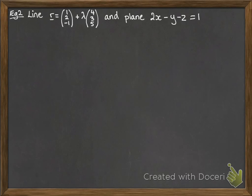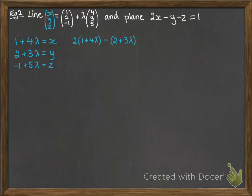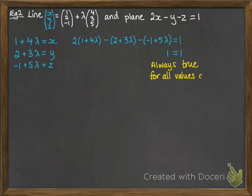This time we've got another line and a plane, so we'll go through the same process. We'll set out our equations for x, y, and z and then put them into the equation for the plane. The previous example gave us one intersection point — the line went through the plane. This one's different. If you multiply out those brackets and simplify, you get 1 equals 1. Since this is always true for any value of lambda, this means that the line lies on the plane, so there are infinitely many points of intersection.